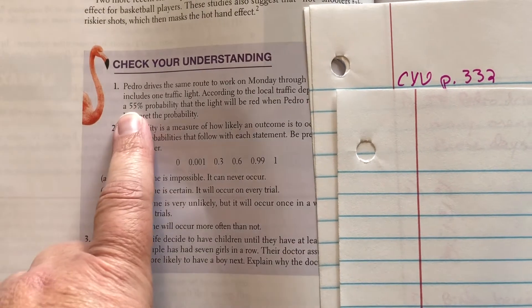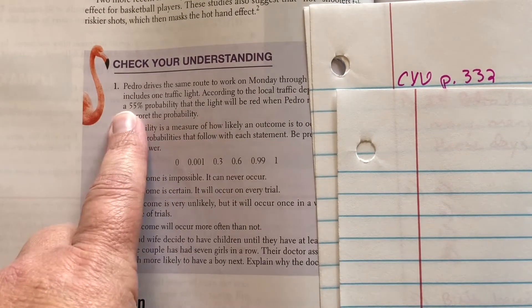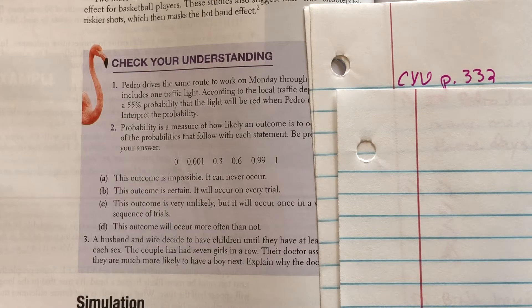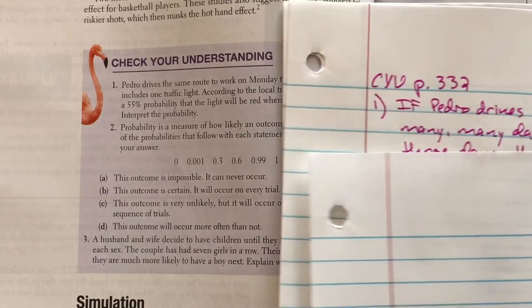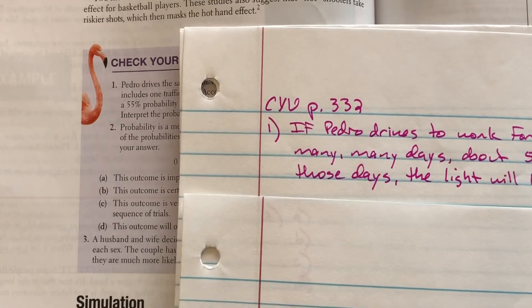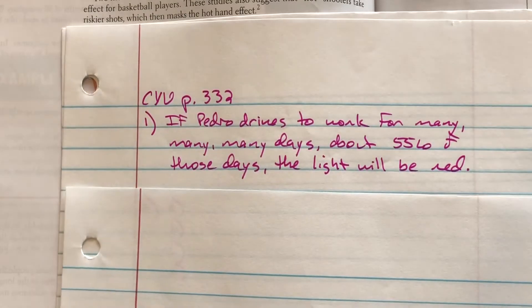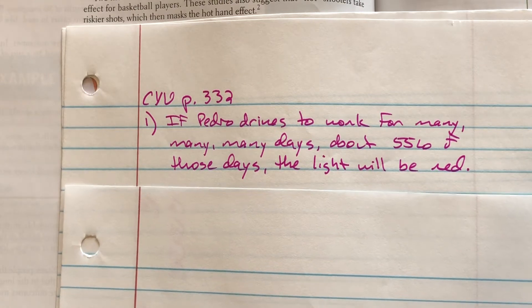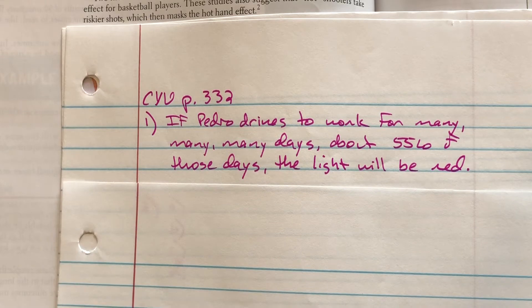So roughly 50 to 60%. So in 10 lights, 5 or 6 of them aren't going to be red. But if Pedro drives to work for many, many, many days, many weeks and months, about 55% of those days, the light will be red. So probability is over the long run, not the short run.